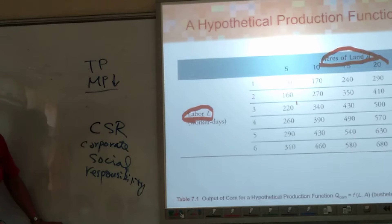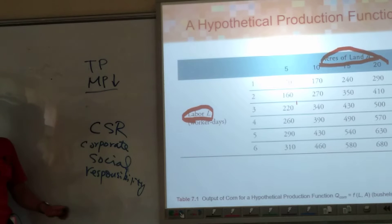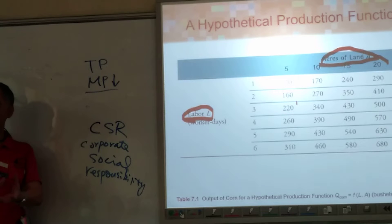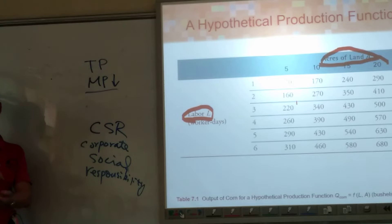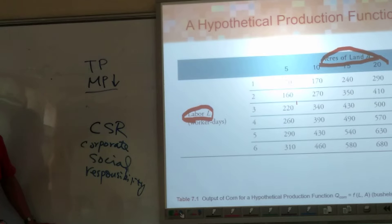Why does MP go down? If you get a lemon and you want to squeeze juice out of it, the first squeeze you get a lot. If you squeeze again, you get less. And even more times, even less. So it is called diminishing return of marginal product — just like diminishing marginal utility.